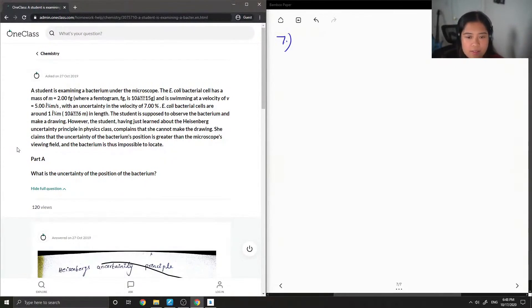I don't think that's important anyways. The student is supposed to observe the bacterium and make a drawing. However, having just learned about the Heisenberg uncertainty principle in physics class, she complains that she cannot make the drawing. She claims that the uncertainty of the bacterium's position is greater than the microscope's viewing field, and the bacterium is thus impossible to locate.